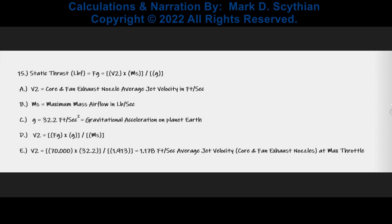Next, we compute the jet velocity by solving the static thrust formula for V2. At maximum throttle, the jet velocity equals 1,178 feet per second, accelerating 1,913 pounds of mass airflow to a final velocity of 1,178 feet per second in a time span of one second.